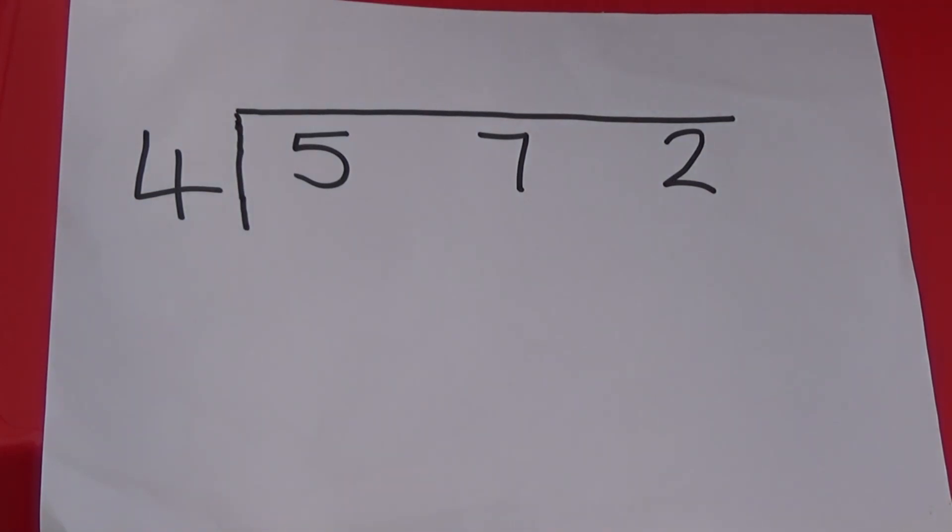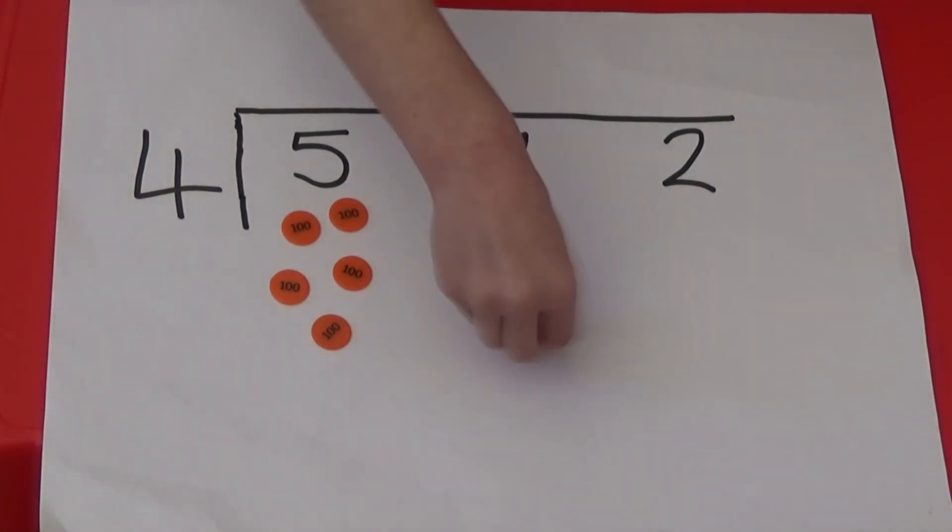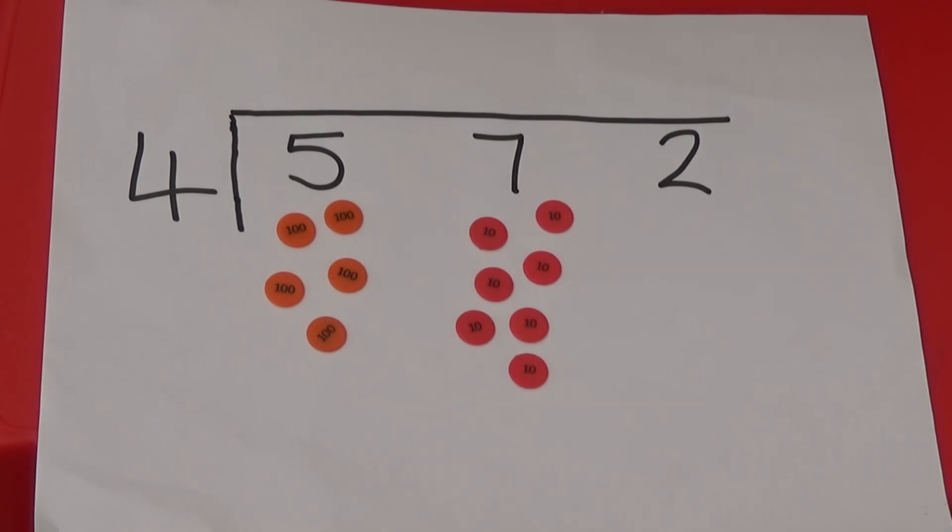I need five 100s for the 500, seven 10s counters for the 70, and two 1s for the 2.